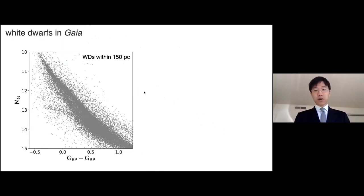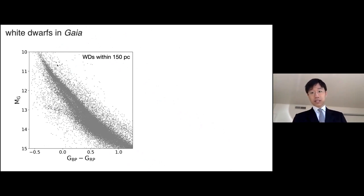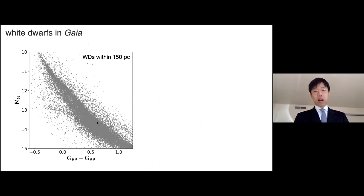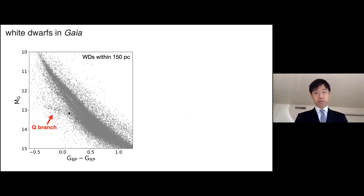Here I'm showing the ACA diagram of white dwarfs in a solar neighborhood using Gaia data. The x-axis is color, the y-axis is absolute magnitude. As you can see, there are mainly three branch structures. The upper two are expected and are now well understood. The third one actually came as a surprise — that's called the Q branch. And this will be the theme of our talk.